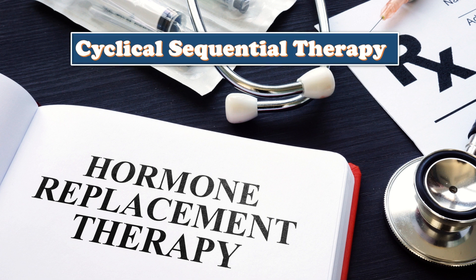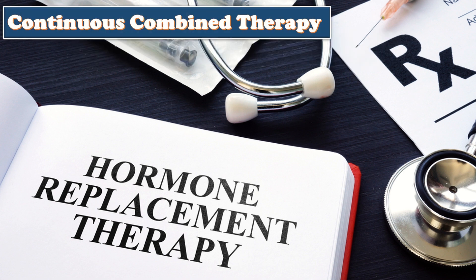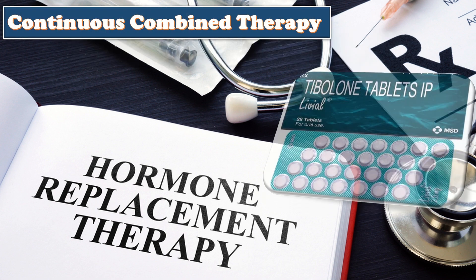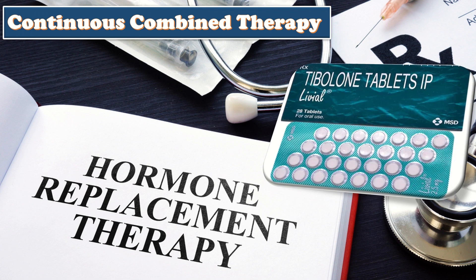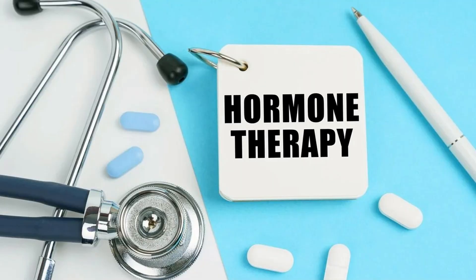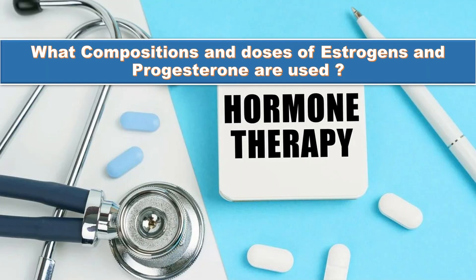The cyclic sequential therapy can be offered to a woman facing troublesome vasomotor symptoms starting in the perimenopausal state. The continuous combined therapy or tibolone is used in postmenopausal women, meaning those having amenorrhea for 12 months.